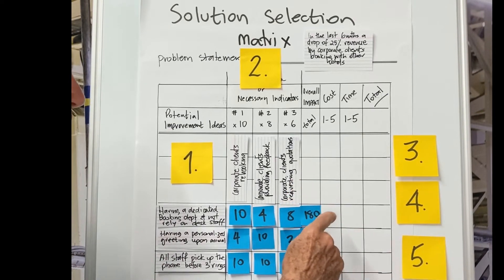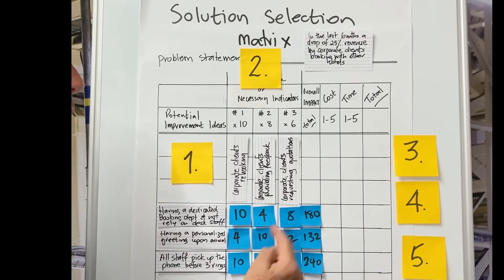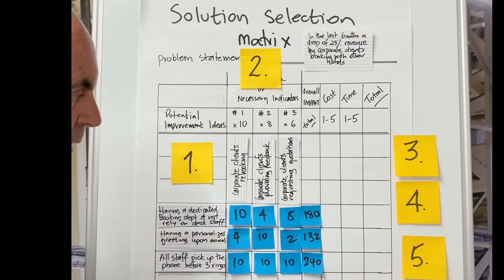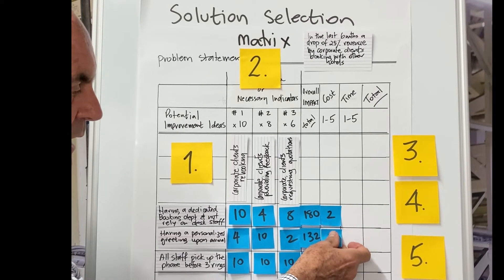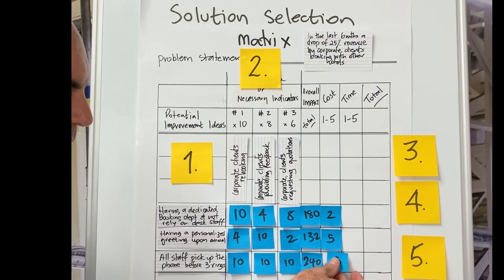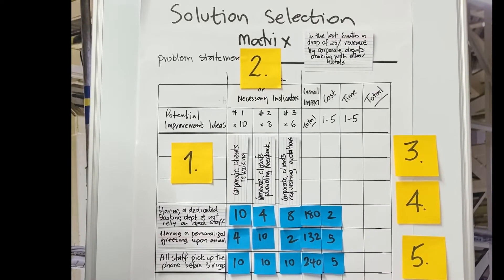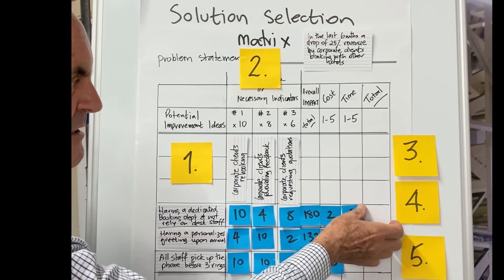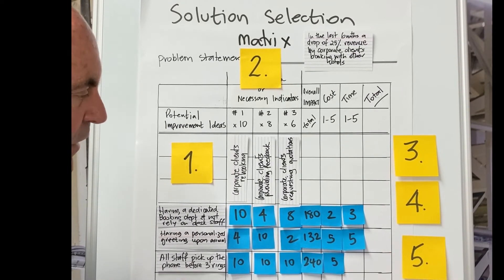Then we go to our cost. Remember the lowest cost to implement is five and the highest cost to implement is one. This is where we start to populate this. So this first idea is reasonably expensive, but the other two ideas are relatively cheap to implement. Then we have a look at the time. Remember time, five is the quickest, one is the most time consuming. So this idea is reasonably time consuming, but these two ideas are fairly quick.